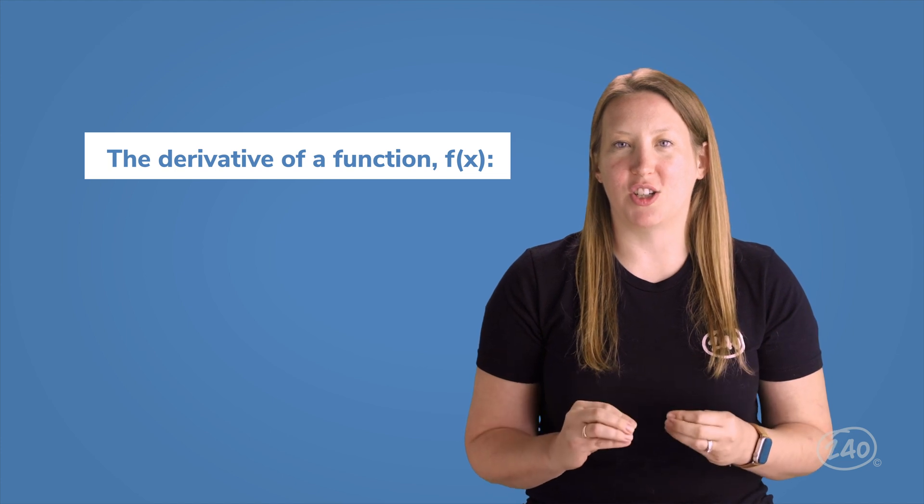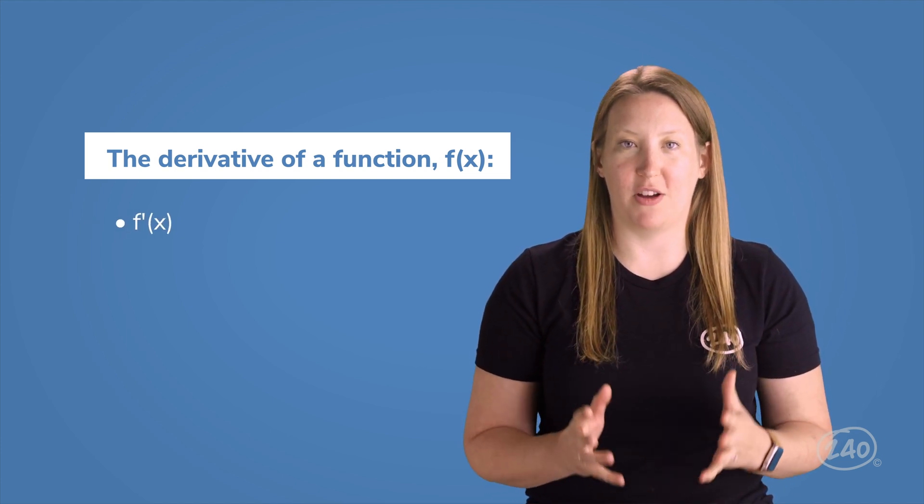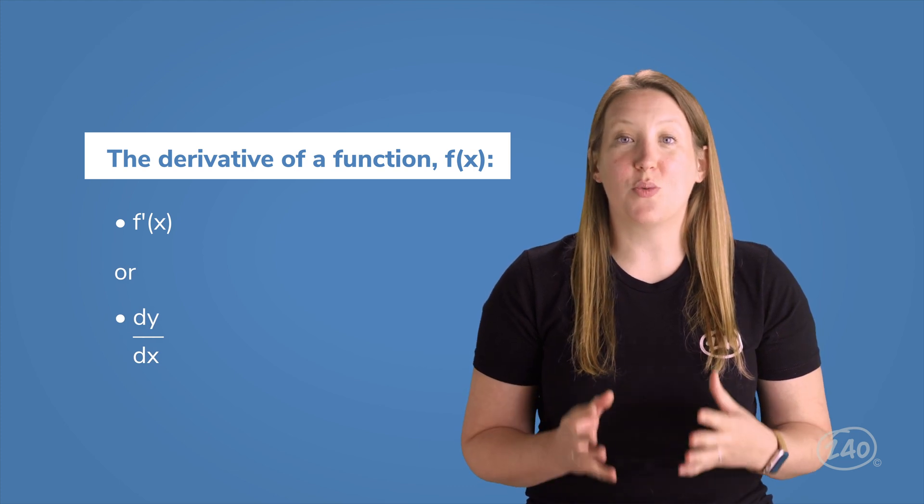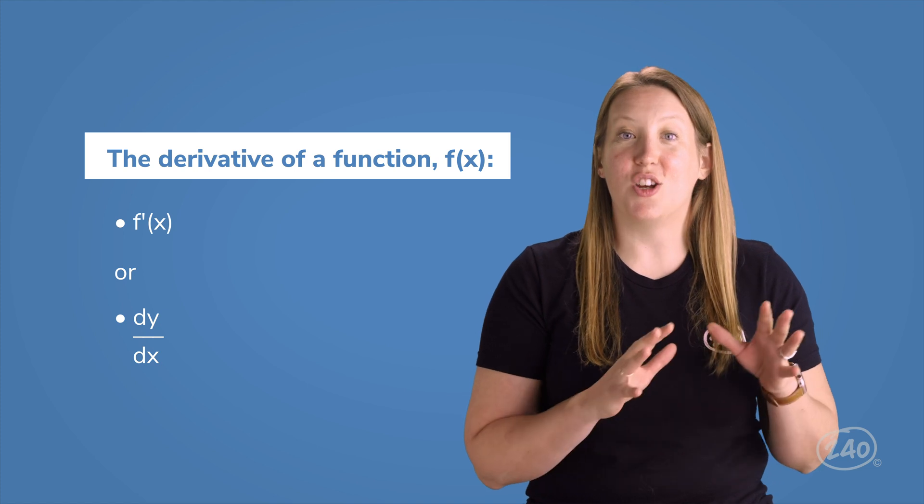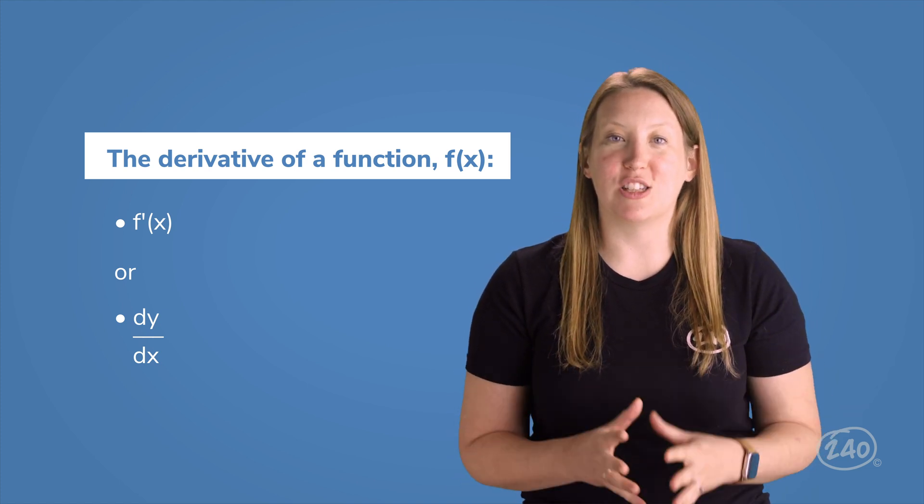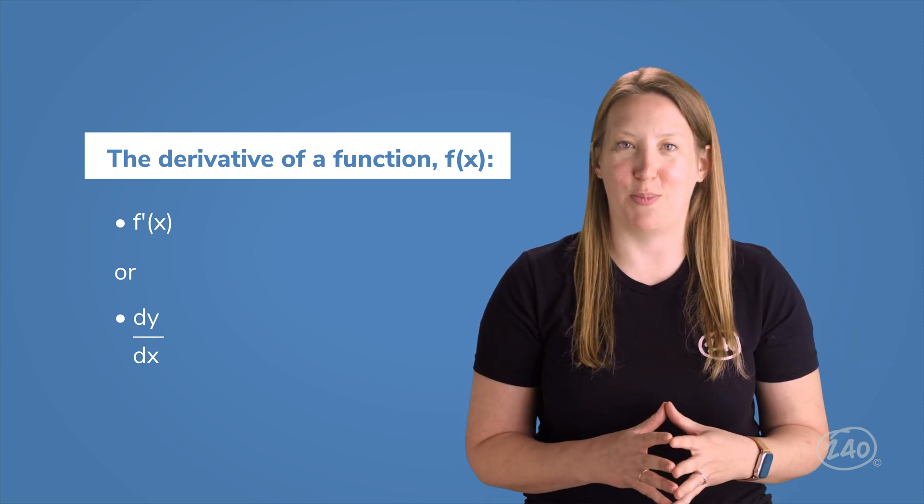The derivative of a function, f of x, is notated by f prime of x, or dy over dx. The derivative means the slope of the curve at x. The derivative finds the slope of a function at a given point by using the slopes of the tangent line that touches the curve at a given point.